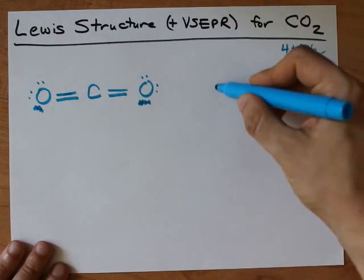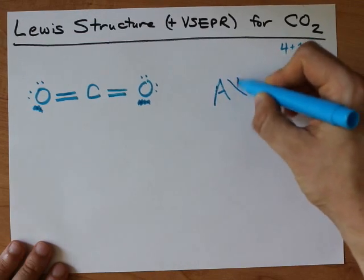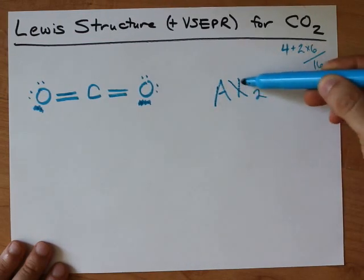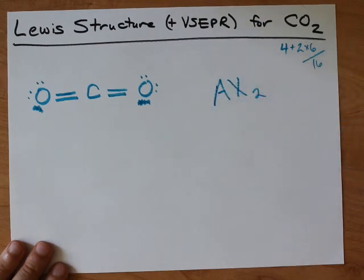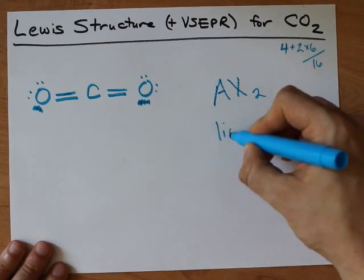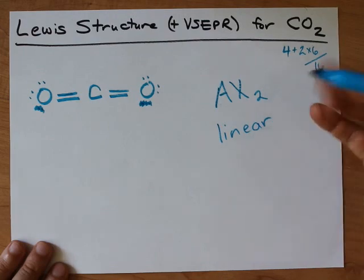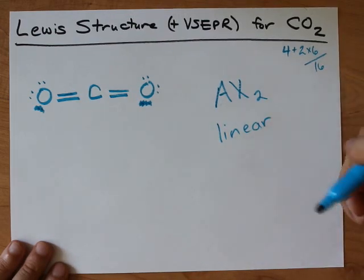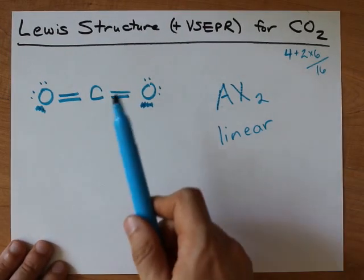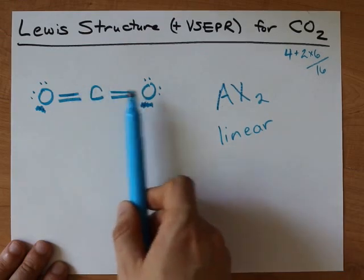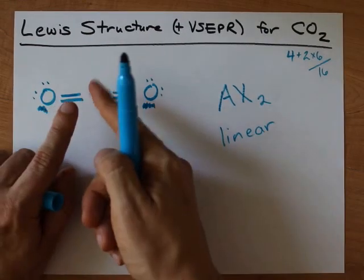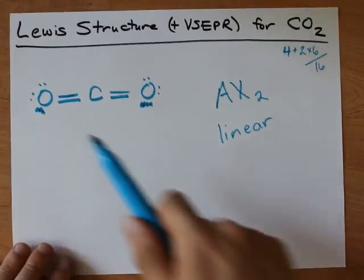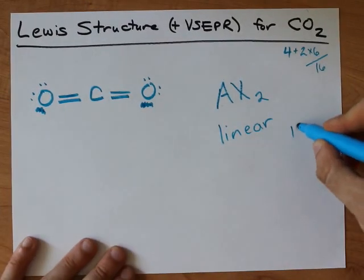If you're into VSEPR, you'll notice that the VSEPR notation here is AX2 because we have two atoms attached to the central atom, and that makes for a linear molecule. That's probably not a surprise. How far apart can two things, or electron repulsion areas, get? It's pointing in opposite directions at 180 degrees to each other.